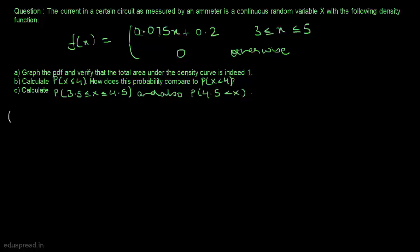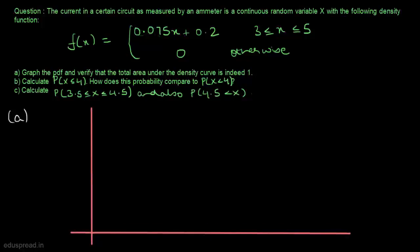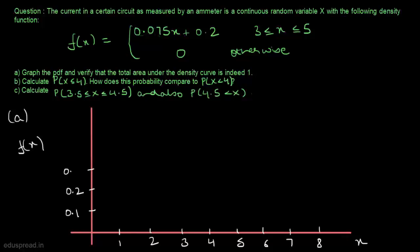In part a we first have to graph the PDF. So let's draw the horizontal and the vertical axis. Here we have f of x and here we have x, and x takes values 1, 2, 3, 4, 5, 6, 7, 8, and the values of f of x are 0.1, 0.2, 0.3, 0.4, 0.5, and 0.6. Now it's given that f of x equals this expression for all values of x between 3 and 5, and it's 0 otherwise.